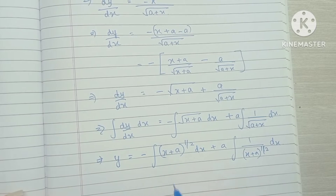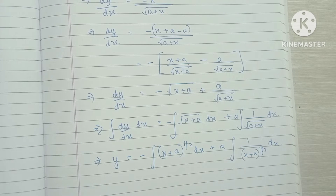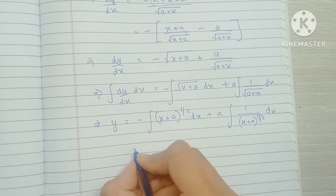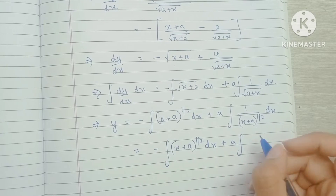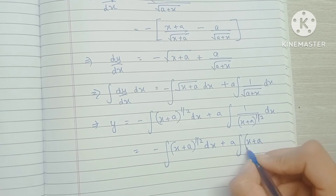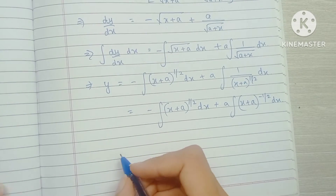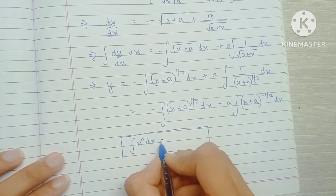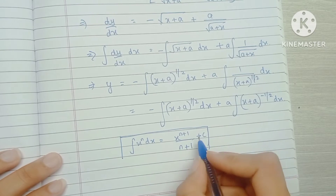Since this is a linear term and x has no variable coefficient, we can use the standard power rule for integration. We bring the second term to the numerator, making its exponent −1/2. We use the formula: ∫x^n dx = x^(n+1)/(n+1) + C.